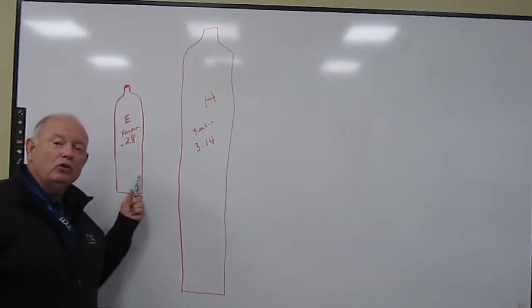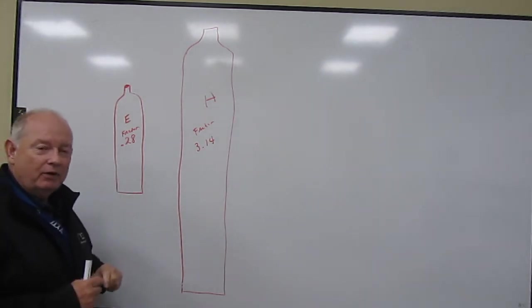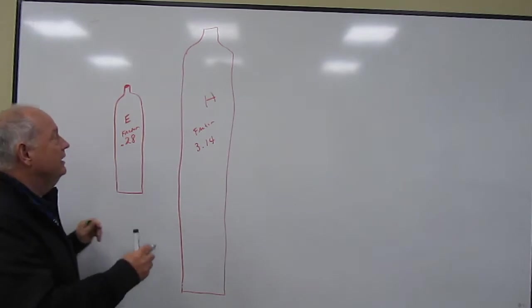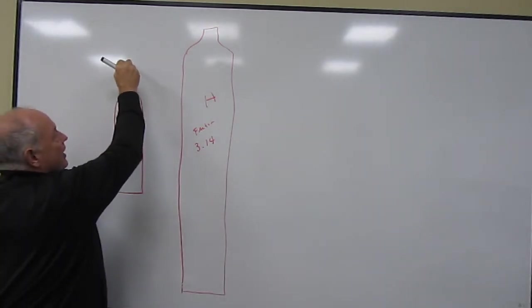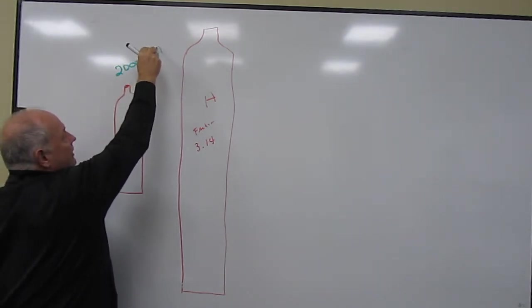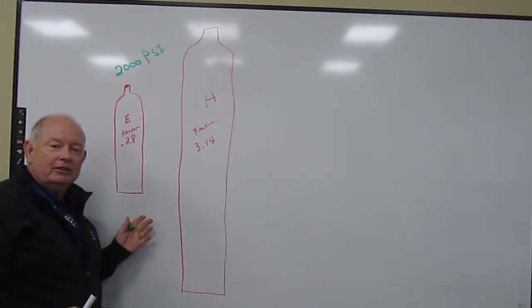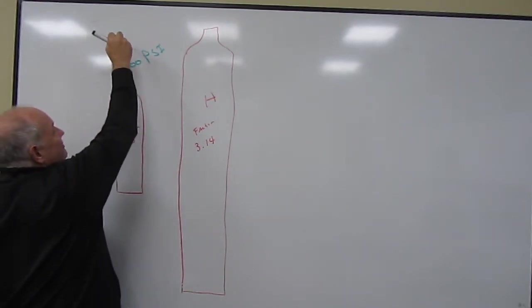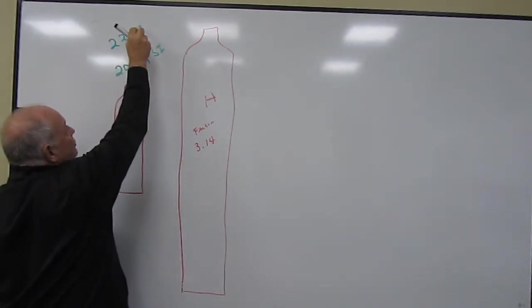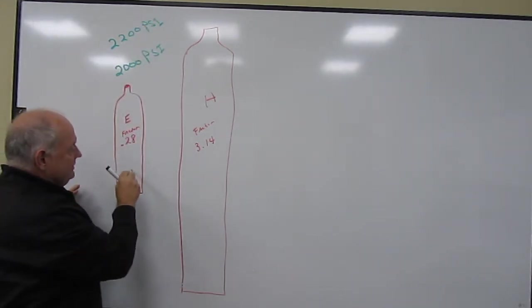Here we have a drawing of an E-cylinder, an E-tank. It has a pressure of whatever is put into it. A fill pressure in an E-cylinder is two thousand pounds per square inch. You can fill most modern cylinders ten percent over, so we can fill this to a maximum of two thousand two hundred pounds per square inch. That's how much force is on the inside pushing out on this cylinder.